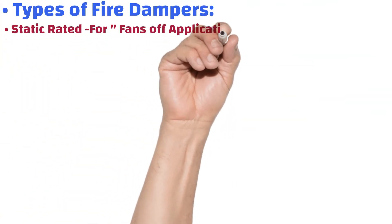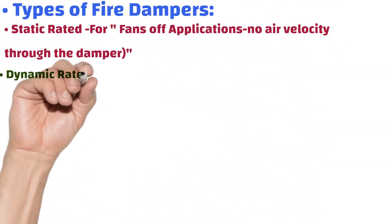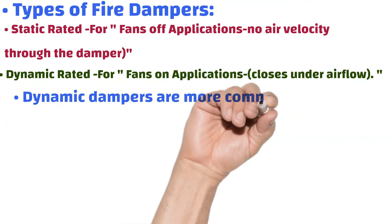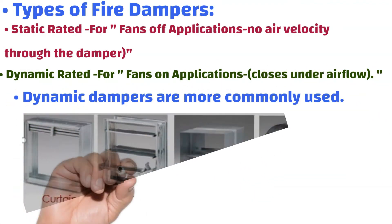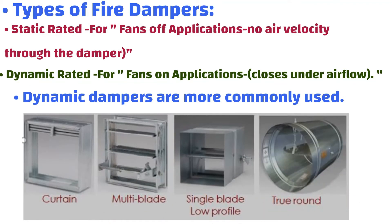Types of fire dampers based on usage are divided into two: static fire dampers and dynamic fire dampers. Static fire dampers are designed to cut off airflow when a fire strikes — triggered by a building's fire system, which automatically shuts off the HVAC system. Dynamic fire dampers are used for applications where the HVAC blower may continue to run during an alarm and are rated to close with and/or against moving air.